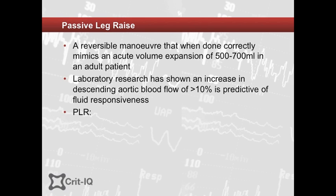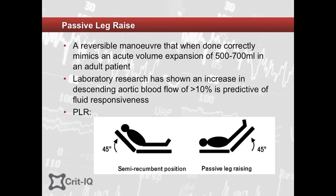A passive leg raise is a reversible manoeuvre that mimics an acute volume expansion. To truly assess its effect, an accurate measure of stroke volume is required. Research shows that a passive leg raise resulting in an increased descending aortic blood flow of greater than 10% is predictive of fluid responsiveness. The procedure requires the patient to start in a semi-recumbent position at 45 degrees head-up, then lie supine with legs passively raised 45 degrees. This is equivalent to a volume expansion of 500–750 ml. Passive leg raise was recently validated in spontaneously breathing patients with sepsis or acute pancreatitis.